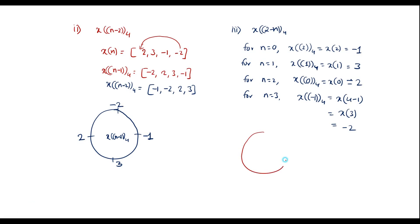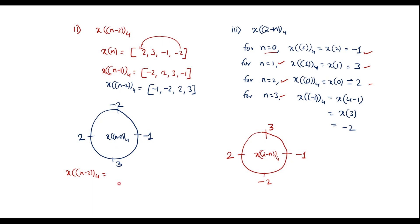Drawing the circle and representing values in the anticlockwise direction: for n=0 it is -1, for n=1 it is 3, for n=2 it is 2, and for n=3 it is -2. This is x[2-n]₄. So x[n-2]₄ = {-1, -2, 2, 3} and x[2-n]₄ = {-1, 3, 2, -2}. Thank you for watching.